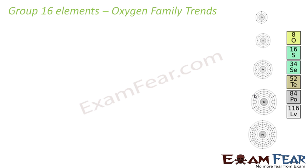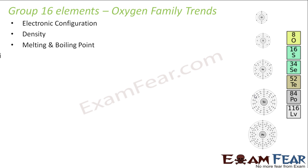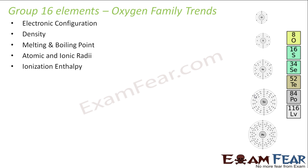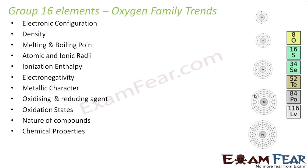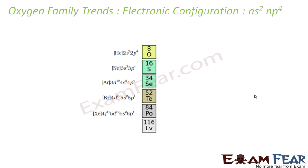Let's start with the trends of the elements in Group 16. We'll discuss the electronic configuration trends, density, melting point, boiling point, atomic and ionic radii, ionization enthalpy, electronegativity, metallic character, oxidizing and reducing agent, oxidation states, nature of compounds, and chemical properties.